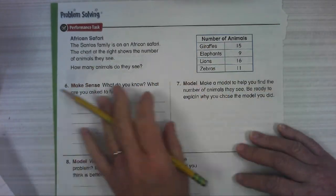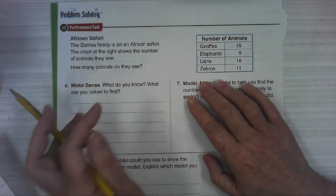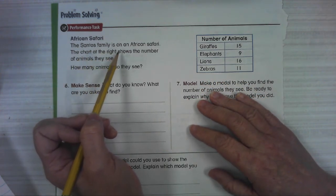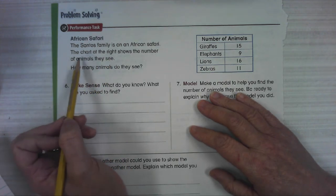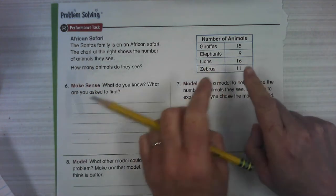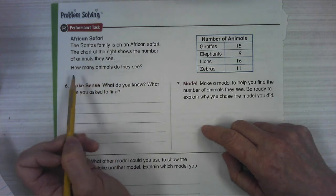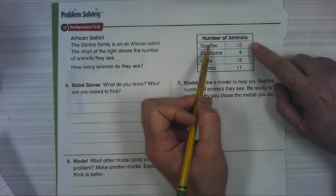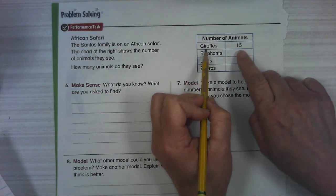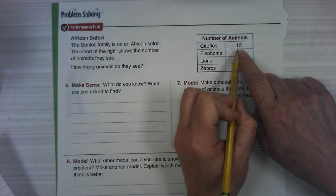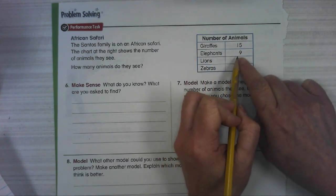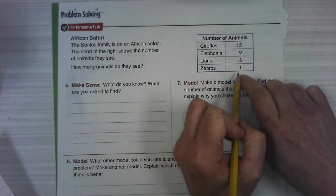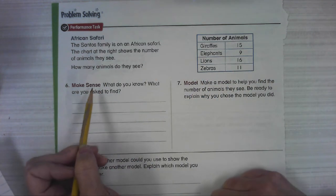This page, these are about this set of information. It says African safari. The Santos family is on an African safari. How exciting. The chart at the right, over here, shows the number of animals that they see. How many animals do they see? So here, the title says number of animals. Giraffes, this means they saw 15 giraffes. Elephants, they saw 9. Lions, 16. Zebras, they saw 11.